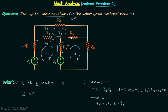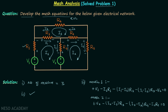Then we have resistance R4, and since I3 is flowing in one direction and I2 in the other, we have minus (I2 - I3)·R4. After this, current I2 flows through resistor R5, giving minus I2·R5. Setting this equal to zero completes our second mesh equation for mesh number two.